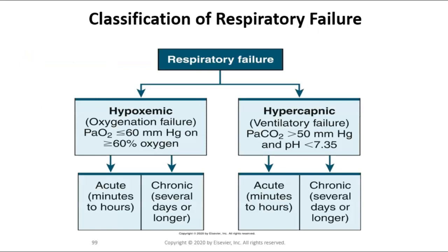Respiratory failure can be acute or chronic. You can have chronic respiratory failure — even hypoxemic and hypercapnic — underlying, and these folks often have exacerbations. For example, an exacerbation of hypercapnic respiratory failure would commonly be a COPD exacerbation. The difference is how long the signs and symptoms last: for acute, it's within minutes to hours, and chronic is longer than that.